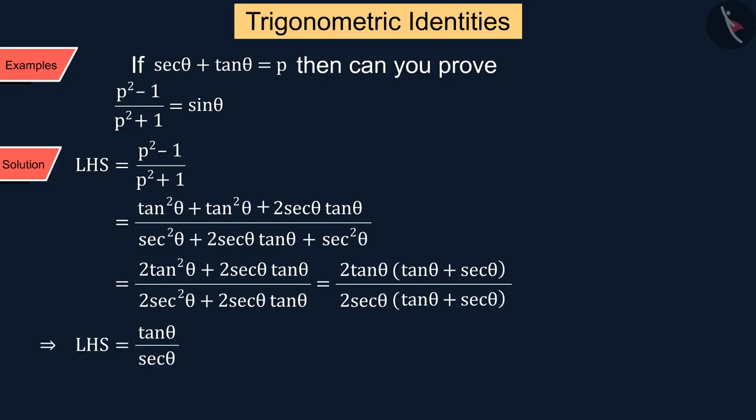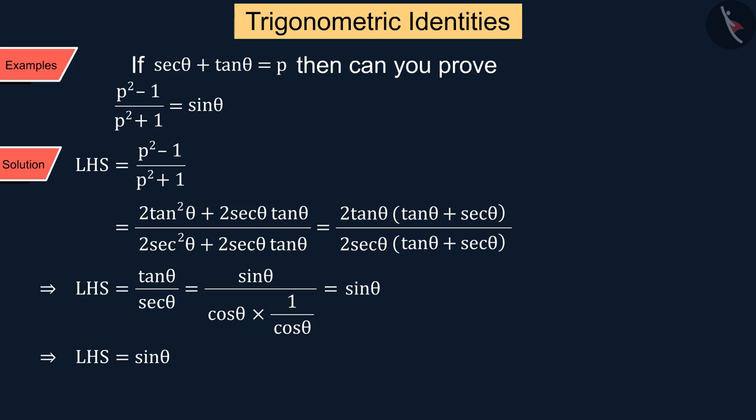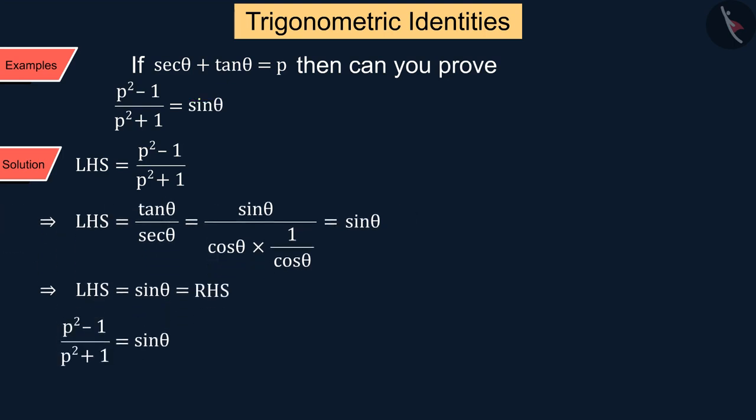But we know that we can write tan θ as sin θ/cos θ and sec θ as 1/cos θ, from which we get the left side value sin θ, which is equal to the right side of the given equation. Thus we proved it. But is this the only way to prove this equation?